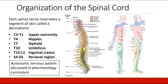Each spinal nerve innervates a segment of skin called a dermatome. It's important to know some of the key dermatomes. C5 to T1 cover the upper extremity. The T4 nerve root innervates the level of the nipples. The T7 nerve root innervates the xiphoid process at the bottom of the sternum. T10 is the umbilicus. T12 to L1 is the inguinal crease. S4 to S5 is the perianal region. In this figure you can see the spinal cord, the spinal nerves C1 through C8 — with C8 coming out below the C7 vertebra — and after that the T1 vertebra, with the T1 spinal nerve above it. At the bottom, you can see the cauda equina hanging down below the level of L1, which is the end of the spinal cord.